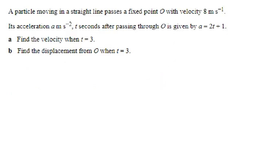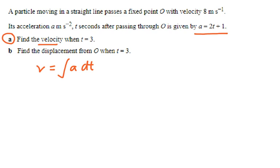We will now look at an example. A particle moving in a straight line passes a fixed point O with a velocity of 8 meters per second. Its acceleration a is given at t seconds after passing through O by the equation a equals 2t plus 1. The question asks you to find the velocity equation and its value when t is equal to 3. To get the equation of velocity, we integrate acceleration with respect to time — that is, the integral of 2t plus 1 with respect to t.